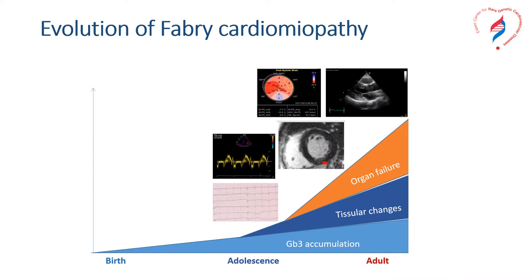As this is a storage disease, the first years of childhood and early adolescence don't show much of any organ involvement except for the acroparesthesia. After adolescence, all the organs affected can begin to manifest their signs and symptoms. And tissue layer changes are followed later, if not treated, by organ failure.